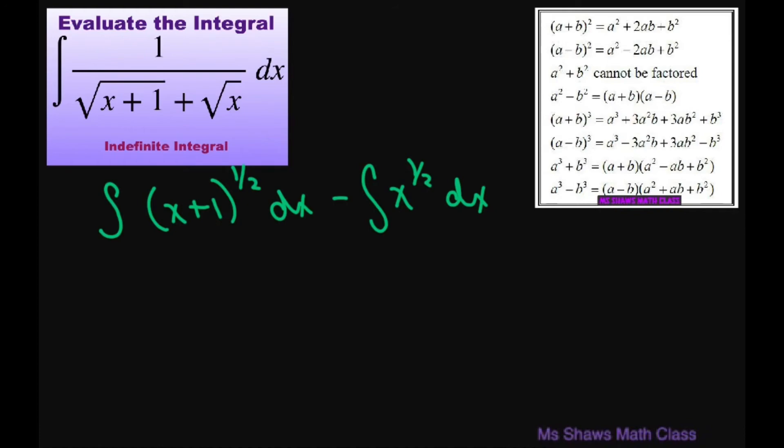Now this one's pretty easy because our constant in front of here is 1. So when we integrate this, we're going to just get, you take your x plus 1 and add 1. So that's going to be 3 halves divided by 3 halves, which is the same as multiplying it by 2 thirds. Minus, same thing for this one, it's just x, and this is going to be 2 thirds to the power of 3 halves plus c.